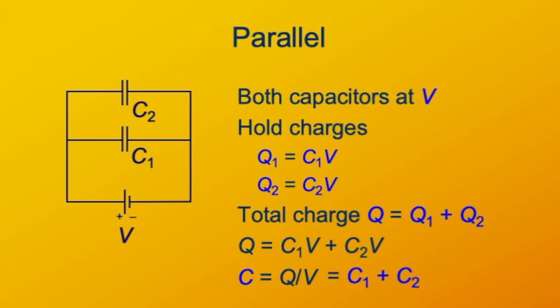In other words, when capacitors are in parallel, their capacitances add. The total capacitance is just the sum of the individual capacitances when the capacitors are in parallel.